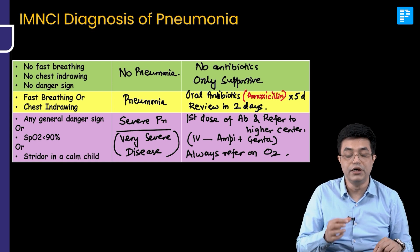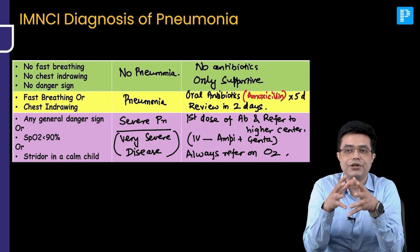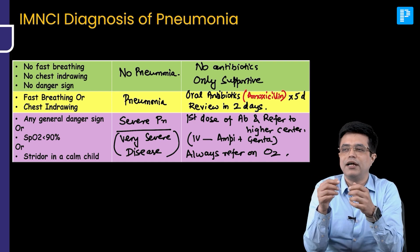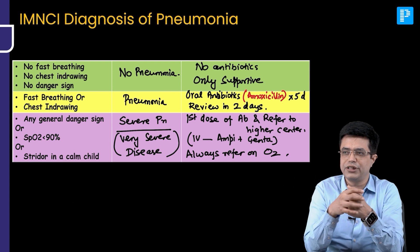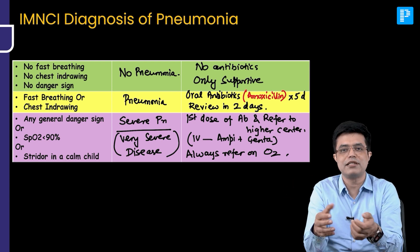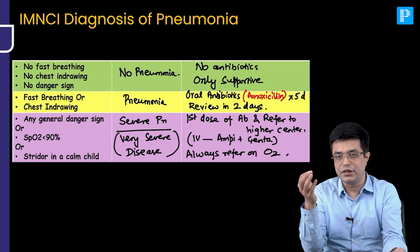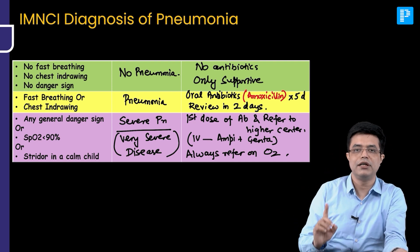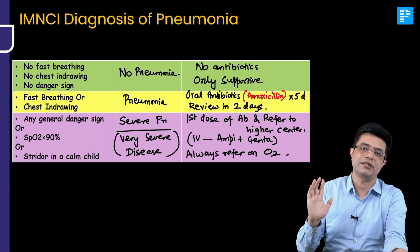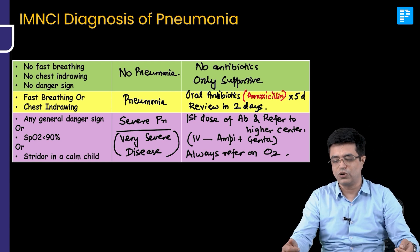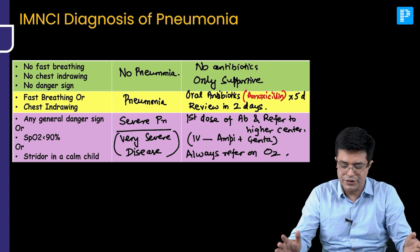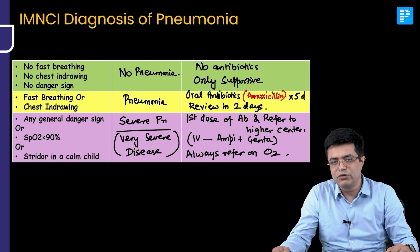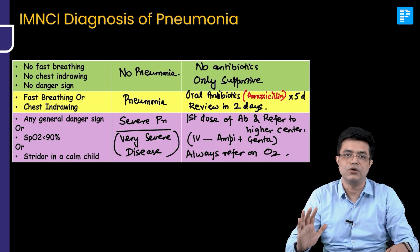This is how the IMNCI diagnosis of pneumonia is made. Clinical cases in exams often present a scenario — for example, a 5-month-old with fever, cough, and chest retractions with or without danger signs — and ask for the diagnosis or next steps. This table directly answers those questions. At least one IMNCI-based question has already appeared in exams, and the table is also useful for college-level exams. Pneumonia has already been covered in detail in the regular video; this content adds to that existing information.